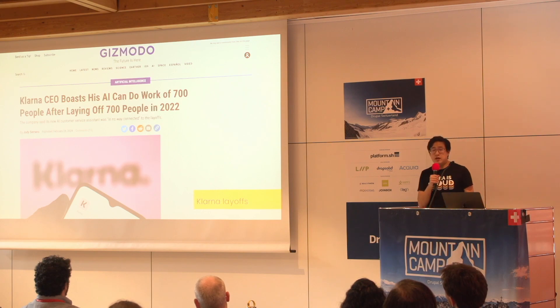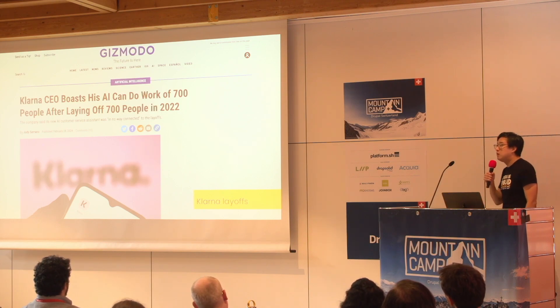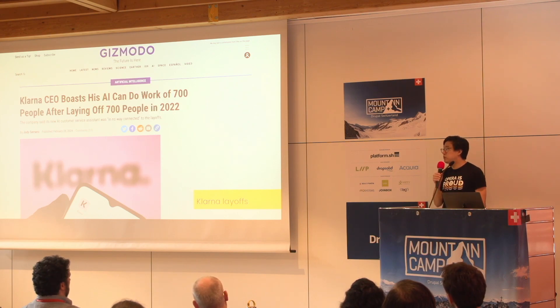Earlier this week, Klarna announced that their chatbot was able to do basically the work of 700 people — and scarcely two years ago they laid off 700 people in customer support and customer service functions. What we're seeing here is AI beginning to bring people out of work. We're seeing this right now in the tech job market, where so many large tech companies have laid off thousands of people and now have open positions for AI and AI management. The company said this new AI chatbot is not connected in any way to the layoffs — well, I'm not so sure we can trust any of these CEOs saying these things.